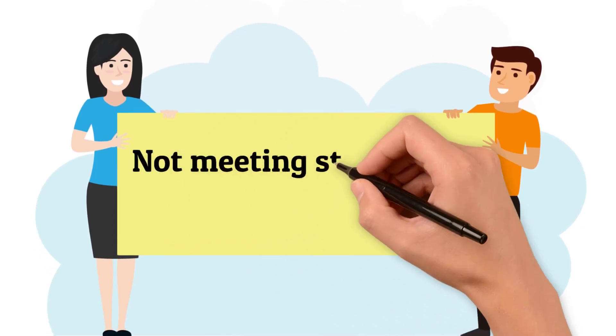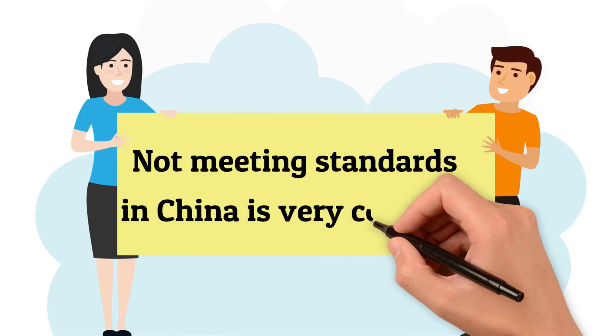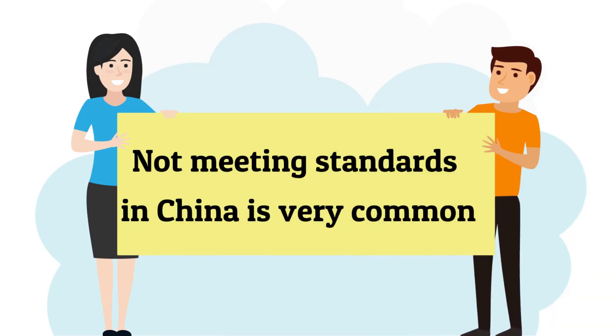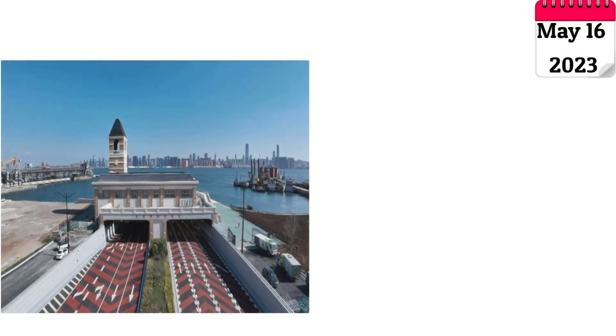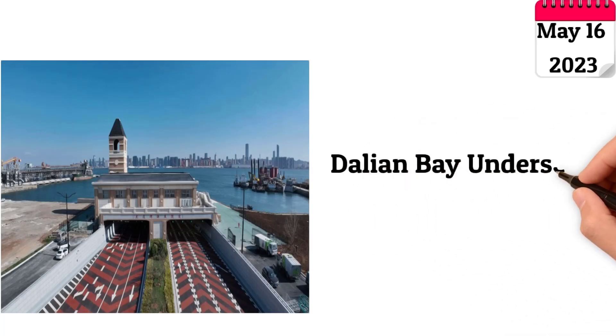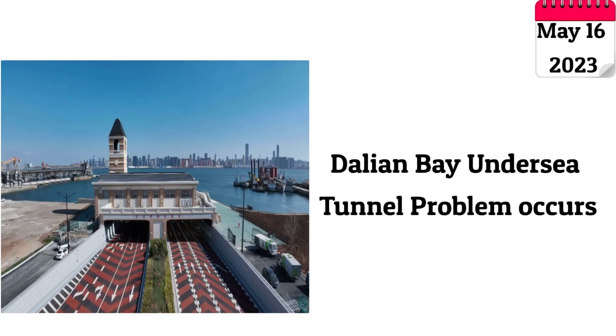Unfortunately, substandard construction projects appear to be a widespread problem in China. The water leak incident in the Dalian Bay Undersea Tunnel in Liaoning on May 16, 2023 raised widespread concerns among netizens. Footage of significant water buildup flooding the tunnel and vehicles hastily turning around quickly went viral, drawing attention to the issue.